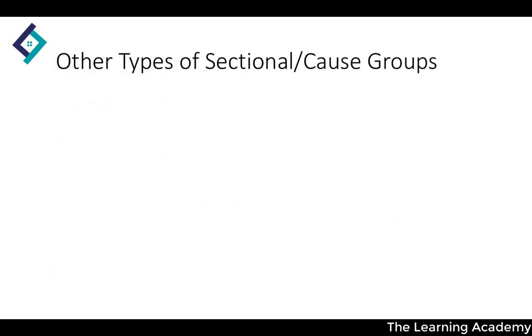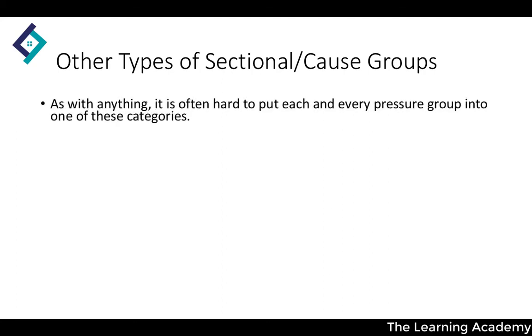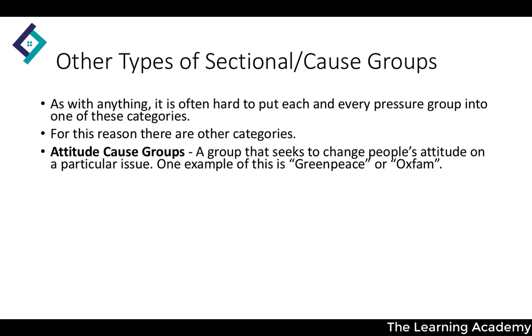There are other types within the sectional and cause group typology. It's often hard to put every pressure group into just one of these two main categories, so there are additional sub-categories. There are attitude cause groups — groups that seek to change people's attitudes on a particular issue. Examples include Greenpeace or Oxfam. Greenpeace, for example, wants to bring people to change their minds about the environment and climate change.